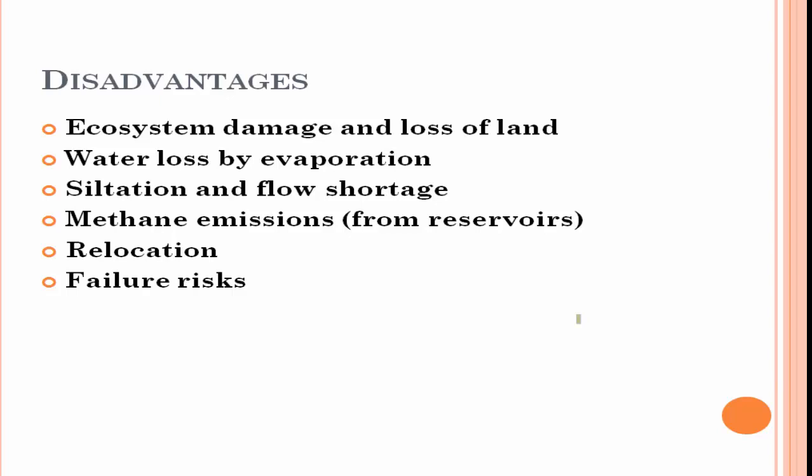The fifth disadvantage is methane emission — methane is a greenhouse gas and will affect the environment. The sixth is relocation — the area around the dam construction will require people to be relocated, which is a major problem. The seventh is failure risks — if a dam fails, it will obviously affect a huge number of people, and this is also one of the primary concerns.